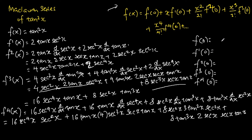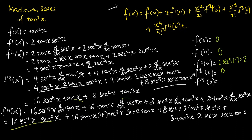Now we evaluate each derivative at x equals 0. f(0) is 0, because tangent 0 equals 0. f'(0) is also 0, because it contains tangent x. f''(0) is 2 secant to the power of 4 evaluated at 0, which equals 2, since secant 0 equals 1. f'''(0) is 0, because both terms contain tangent x. For f''''(0), all terms except the first contain tangent x and vanish, so we focus on 16 secant to the power of 6 evaluated at 0, which equals 16.